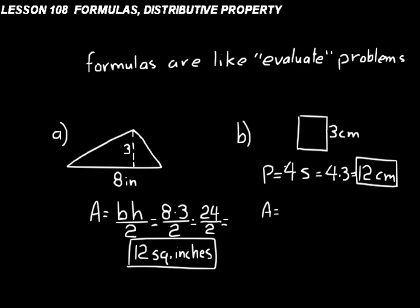Substitute that 3 in for the S. Now the area is equal to S squared. Side times side is the same thing as side squared. So we're doing 3 times 3, or 3 squared, which equals 9. In a problem with an exponent, just put the 3 in where the S was and keep the squared. 3 squared — 3 times 3 — is 9 square centimeters.